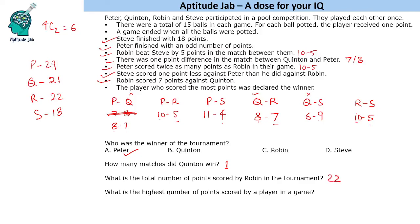What is the highest number of points scored by a player in a single game? The highest is 11 points — scored by Peter against Steve. That is the solution to the set and the answers to all the questions.